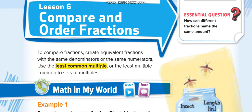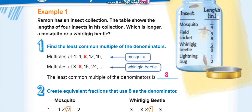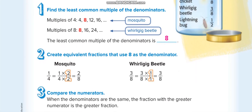Use the least common multiple, also known as LCM. LCM means least common multiple — the least multiple common to two sets of multiples. Let's look at how to find the least common multiple. For example, to make the denominator the same...